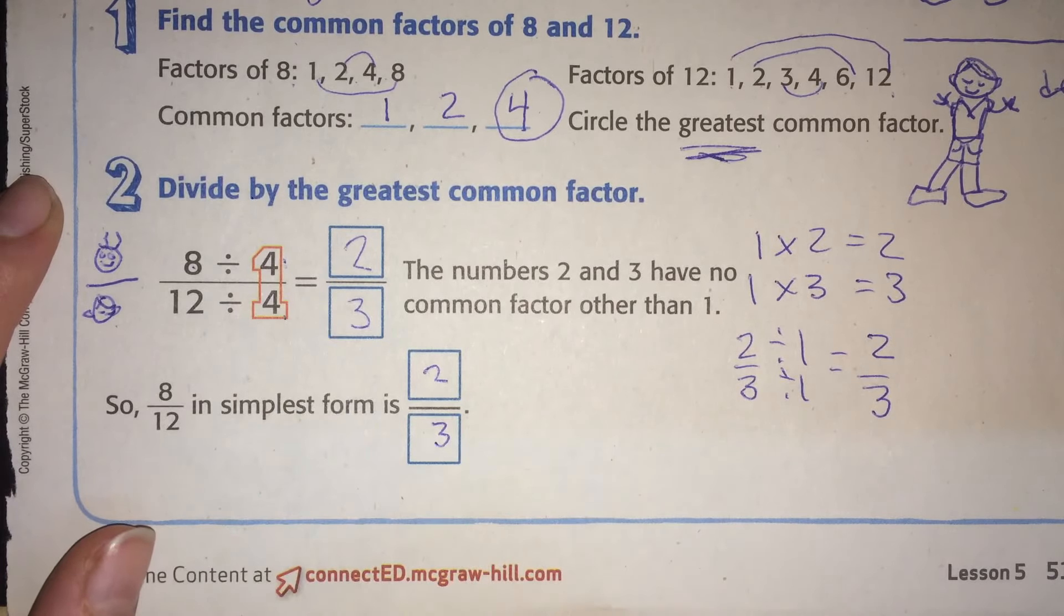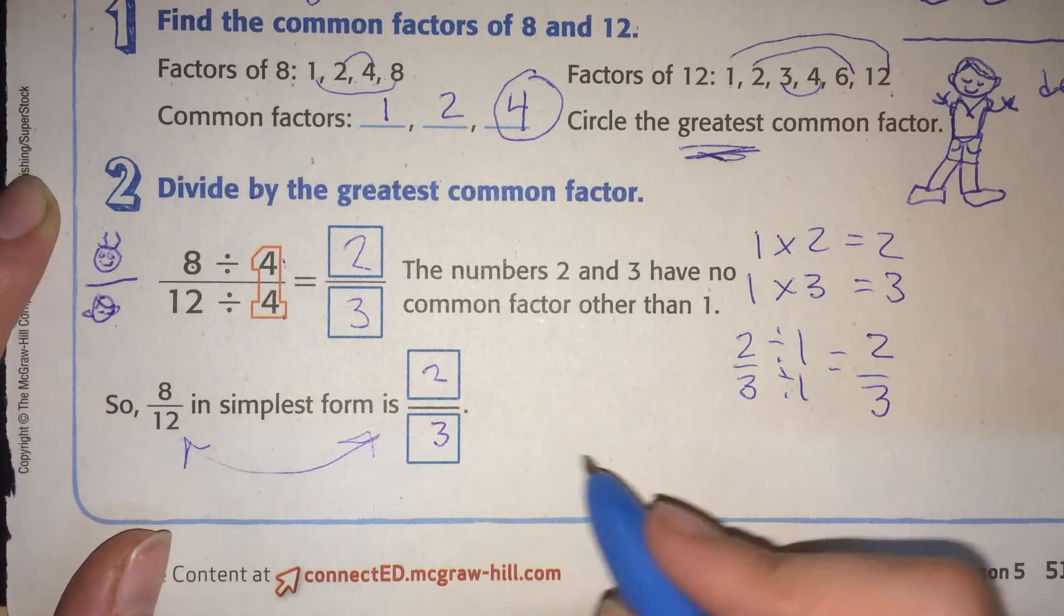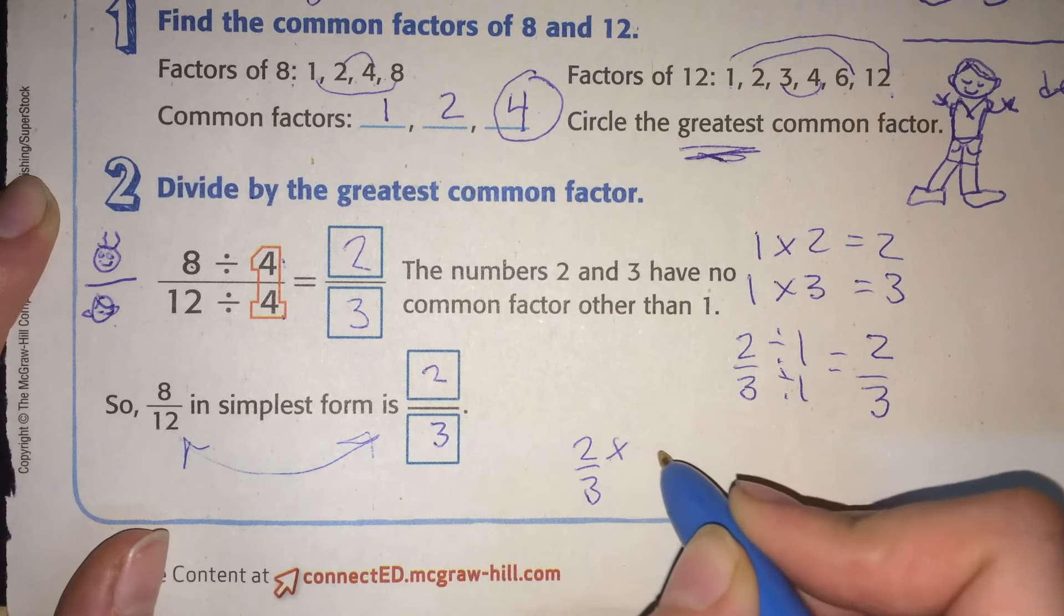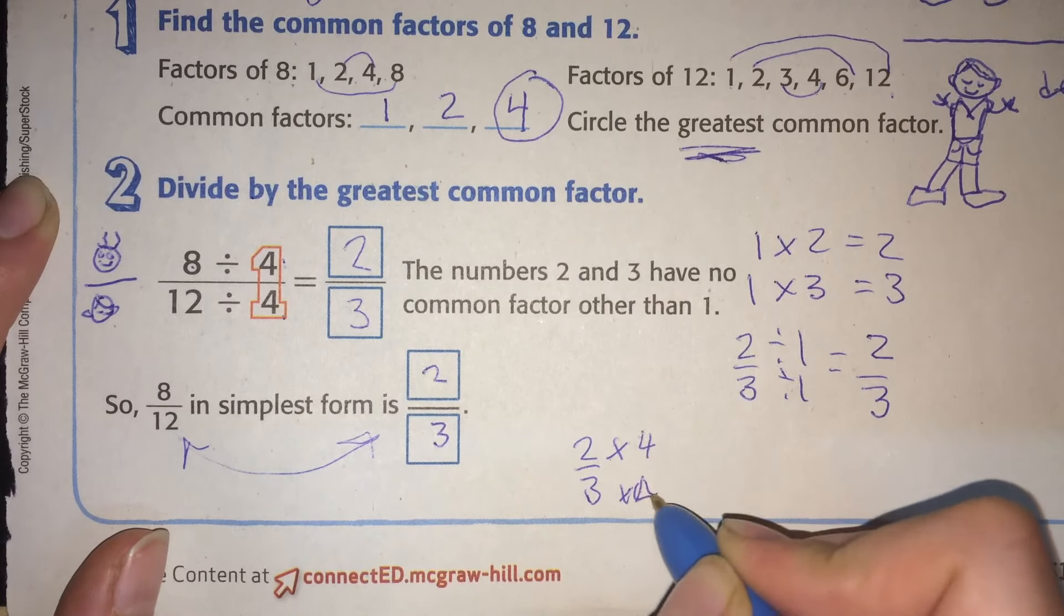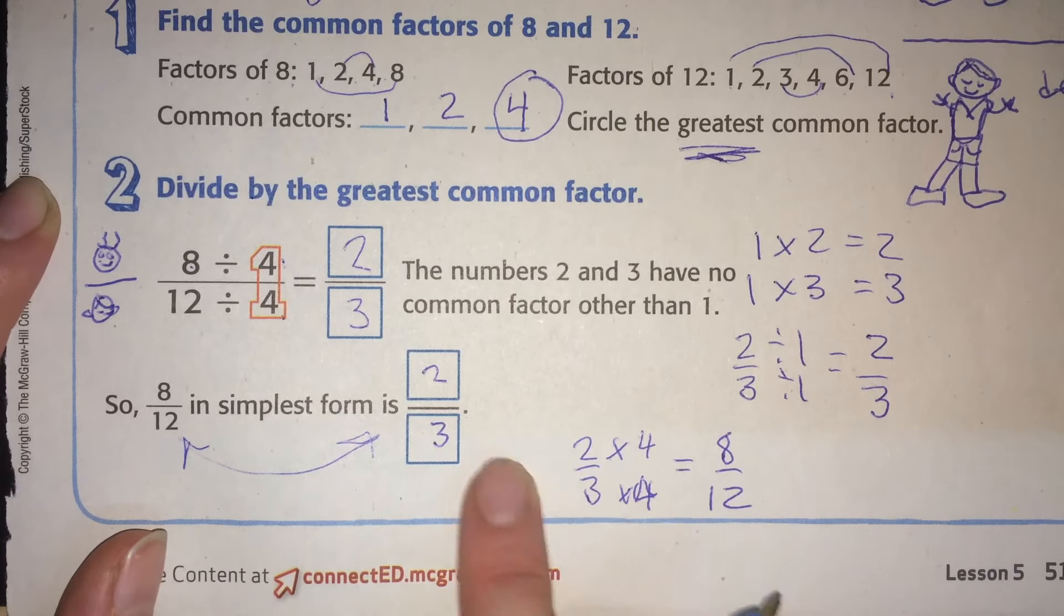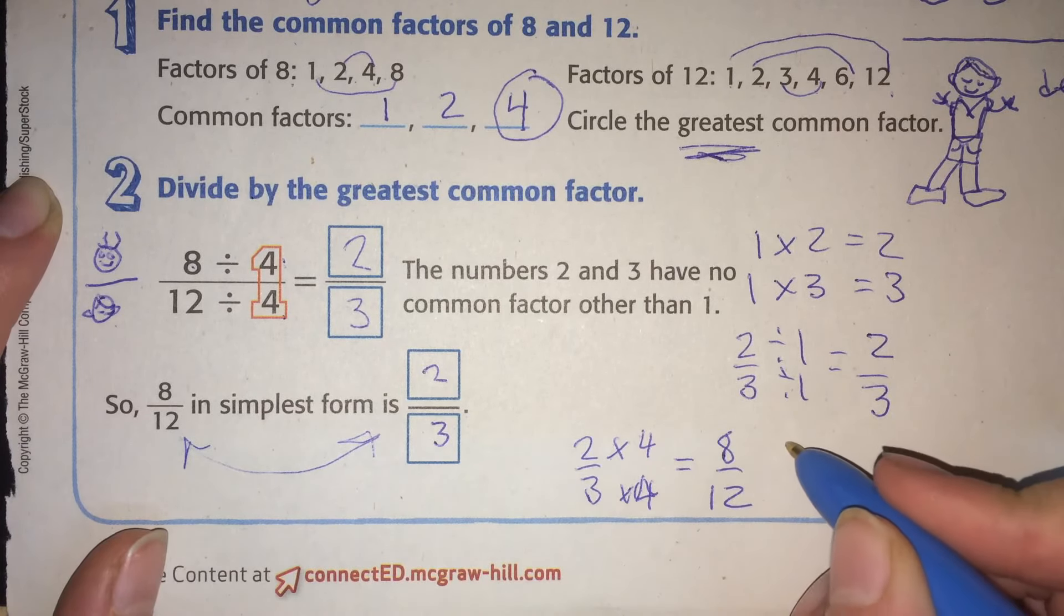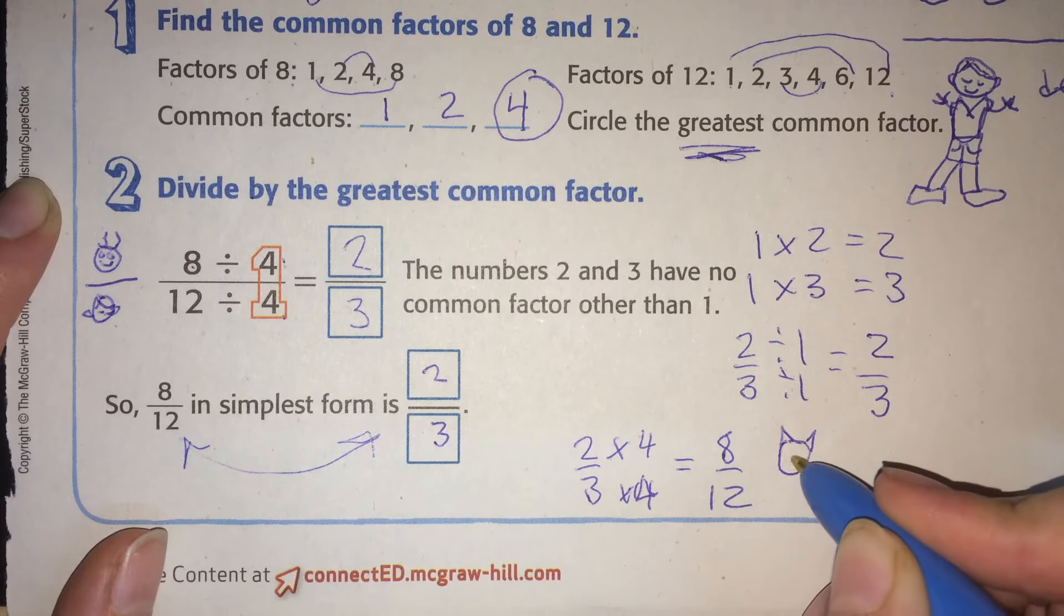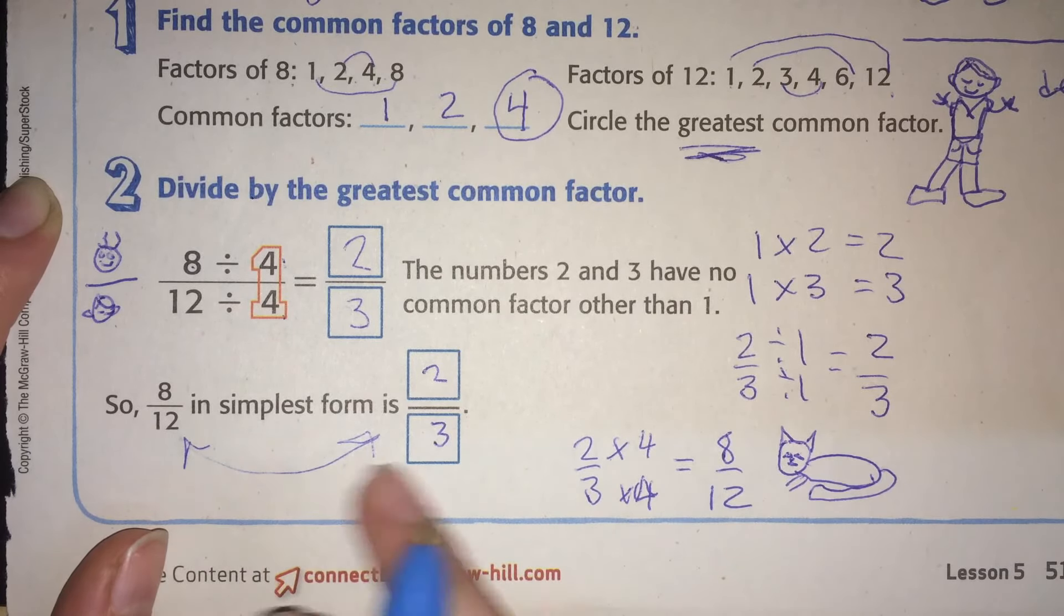Remember that story about the equivalent fractions? These ones are equivalent fractions. 2 thirds times 4 times 4 equals 8 twelfths. So it goes backwards. So this is the equivalent fraction. This is the expanded fraction. The fat cat fraction. Remember the fat cat fraction. And this is the simplest form.